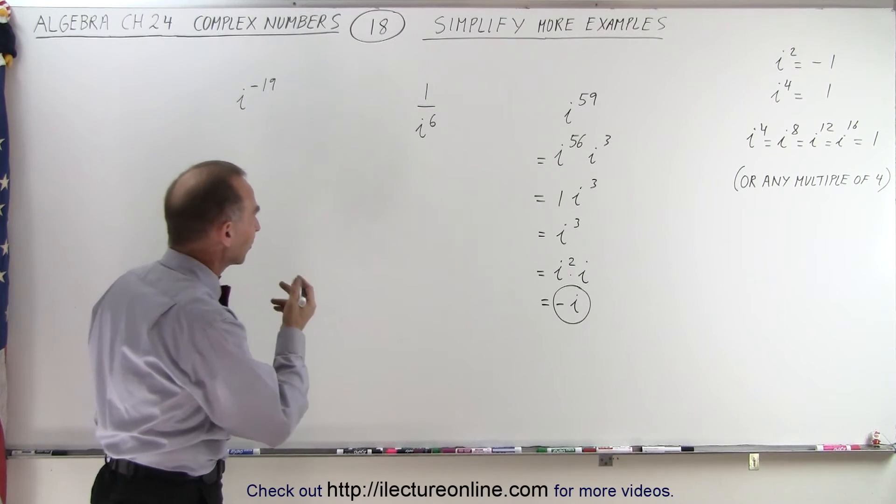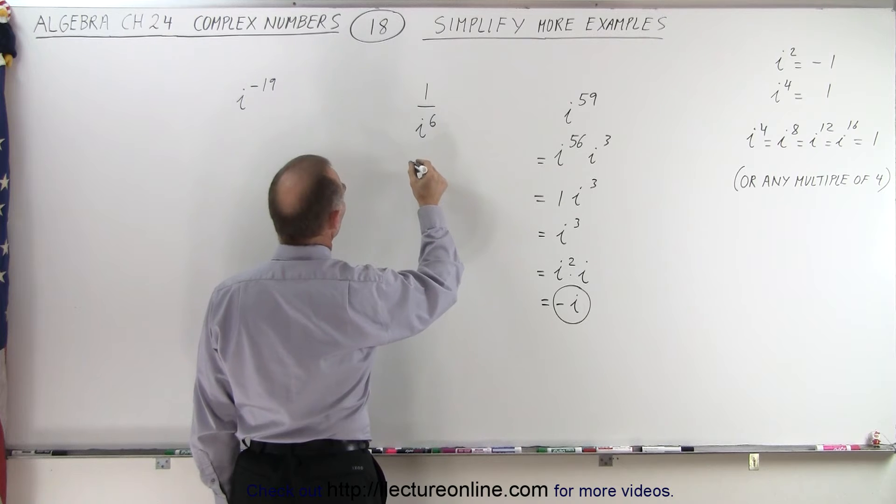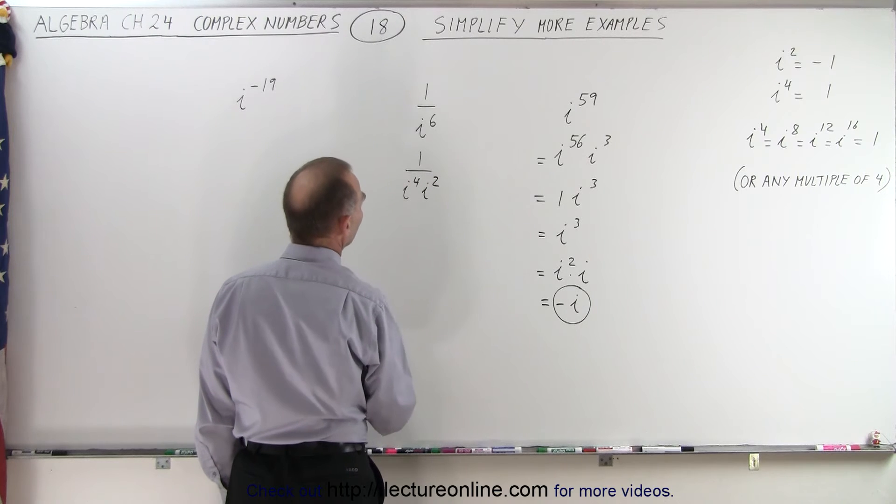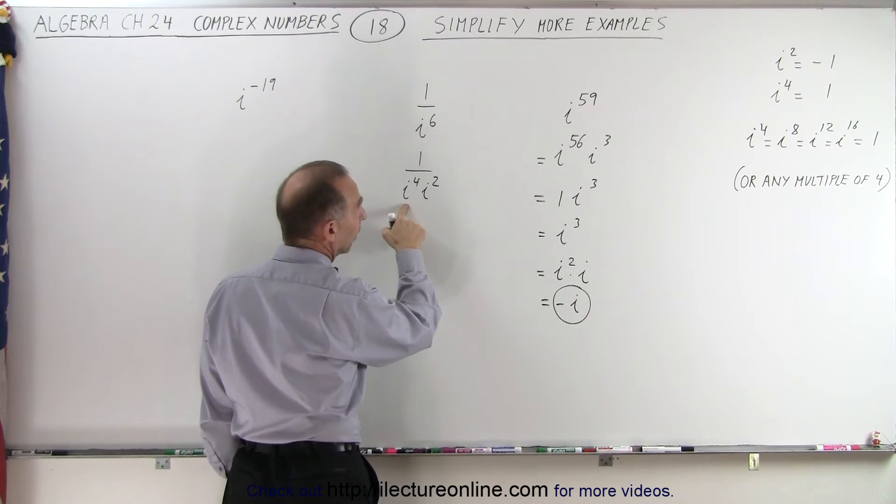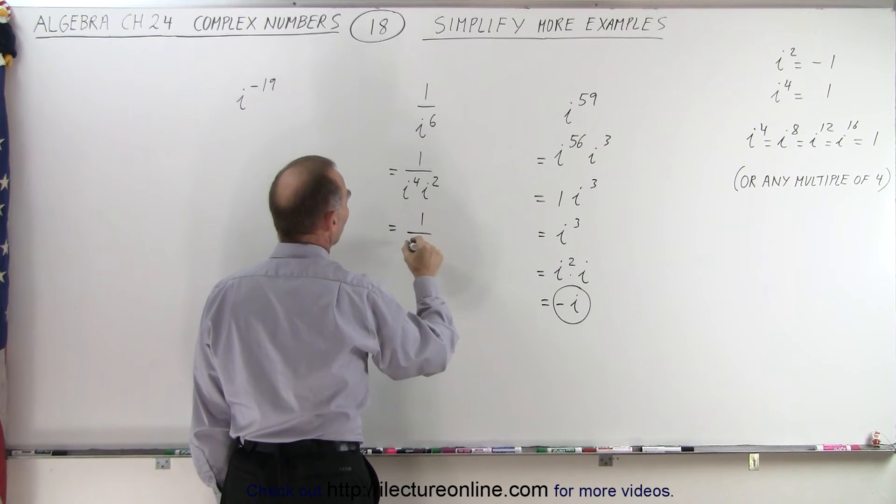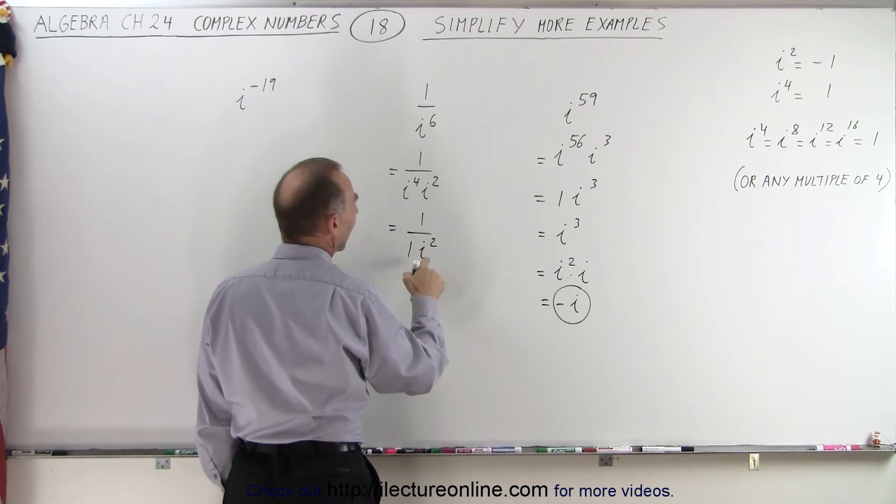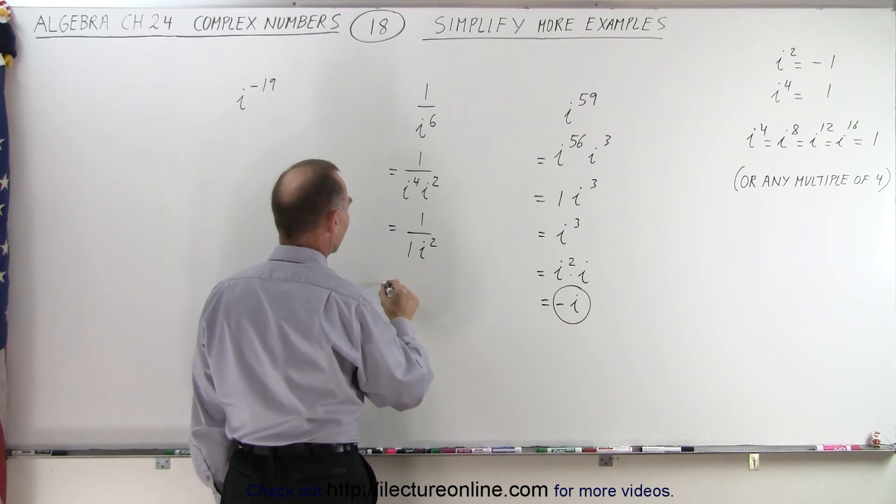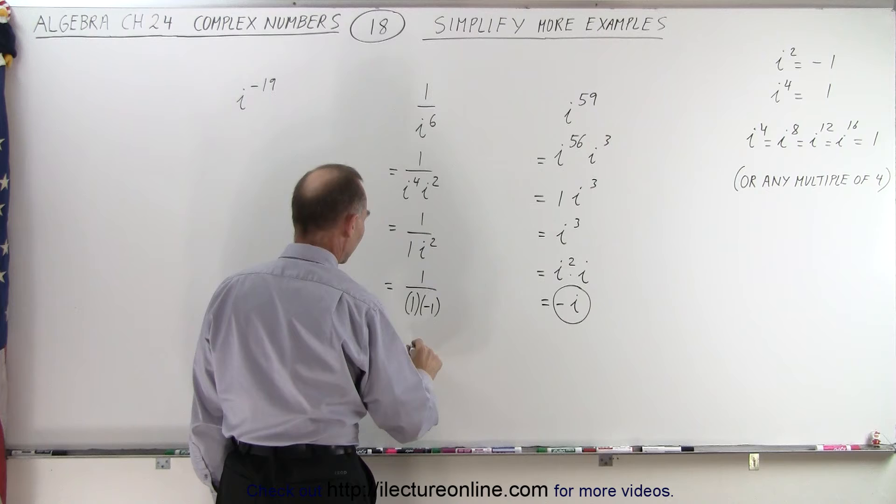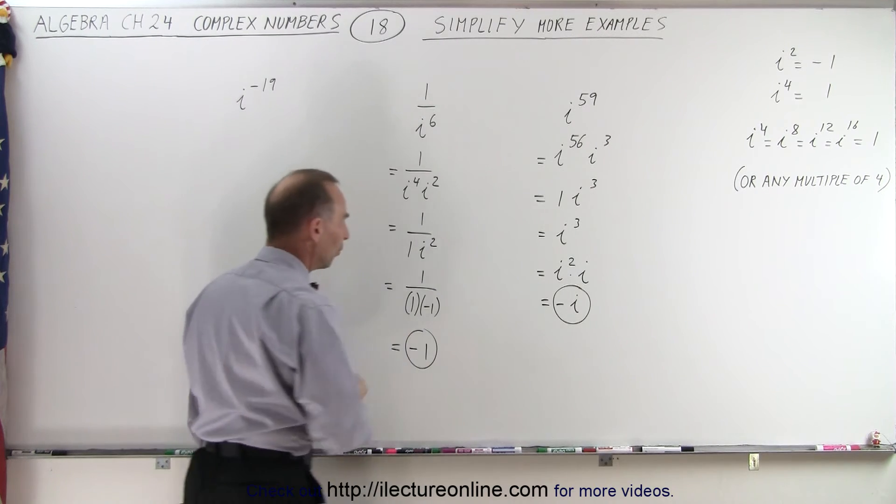How about 1 over i to the 6th? Well, you can say that this is the same as 1 over i to the 4th times i to the 2nd power. And i to the 4th is equal to 1. So that can be written as 1 over 1 times i squared and i squared is equal to negative 1. So this is equal to 1 over 1 times a negative 1 or this is simply equal to a negative 1.